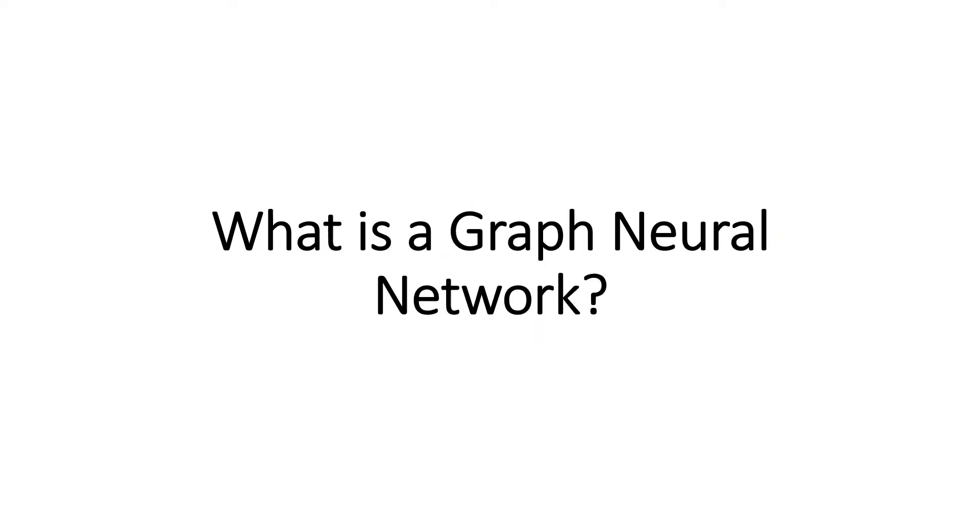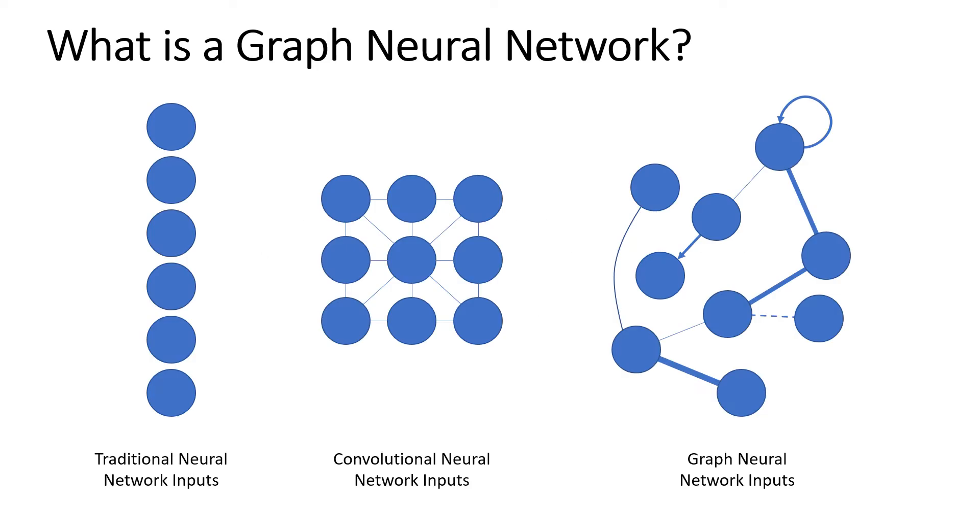Graph WaveNet is a type of graph neural network, and specifically it's called a Spatial Temporal Graph Neural Network. In the most general sense, graph neural networks are concerned with the same kinds of problems as traditional neural networks and convolutional neural networks in that they take in some sort of input and they use that input to produce a prediction or a classification.